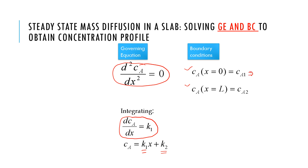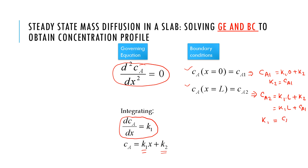To solve for the two unknowns, we substitute the boundary conditions. Using the first boundary condition, we get Ca1 = K2, so K2 = Ca1. Then using the second boundary condition, we get Ca2 = K1·L + Ca1, so K1 = (Ca2 - Ca1)/L. We substitute these constants back into the general solution.